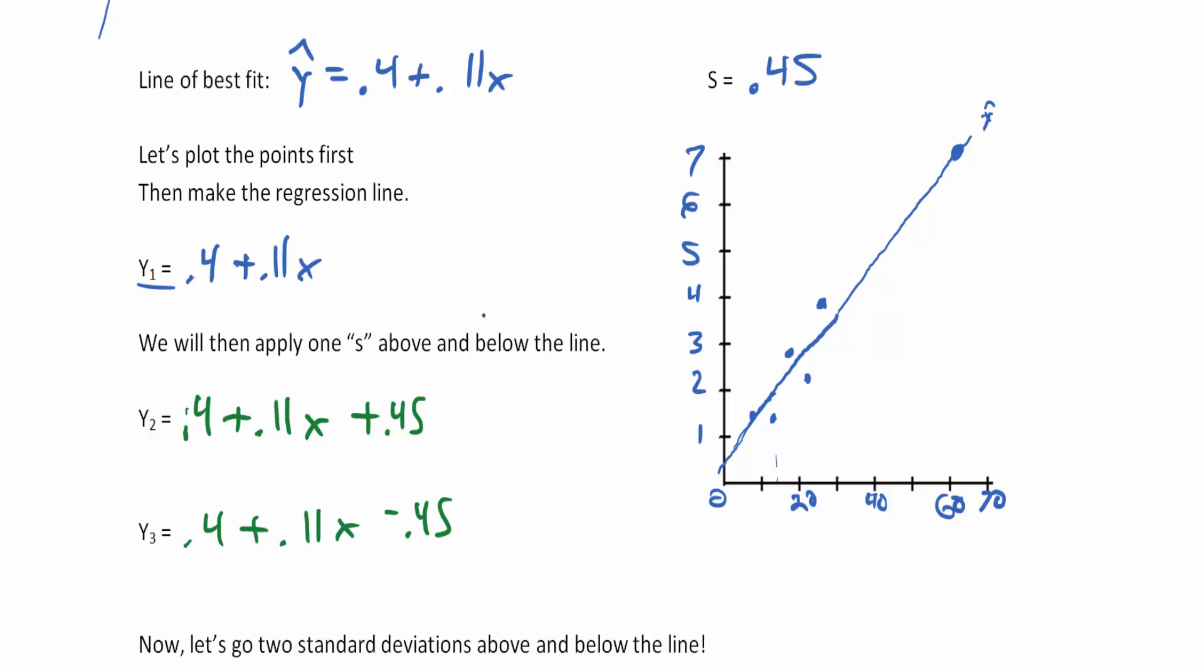Those of you with a lot of algebra might notice we could have combined the y-intercept with the standard error of the estimate. But I think having it separate shows that this just elevated the line of best fit up a half step and down a half step.